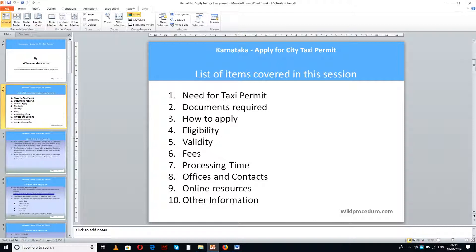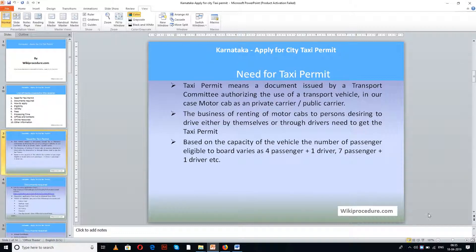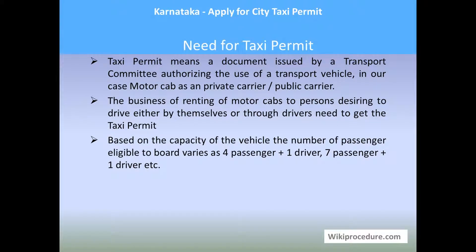The list of items covered in today's session: need for taxi permit, documents required, how to apply, eligibility, validity, fees, processing time, offices and contacts, online resources, and other information. This procedure is sponsored by WikiProcedure.com.